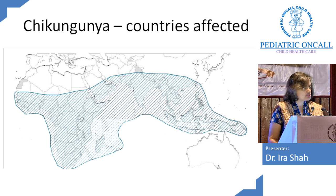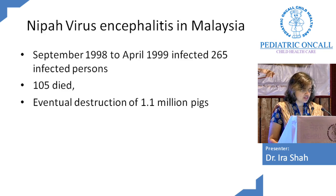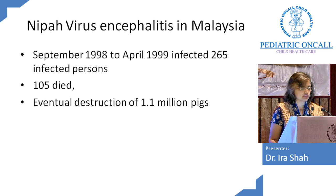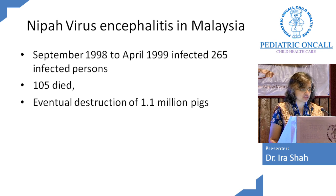Remember, chikungunya is not only in Southeast Asia — it also covers a large belt of Africa. So if you have somebody coming with fever and joint pains who has traveled to Africa, think of chikungunya. Nipah virus encephalitis was seen in the 1990s in Malaysia, related to pigs and mosquito bites; 1.1 million pigs were destroyed. So if you get a child with viral encephalitis, always ask for a travel history.